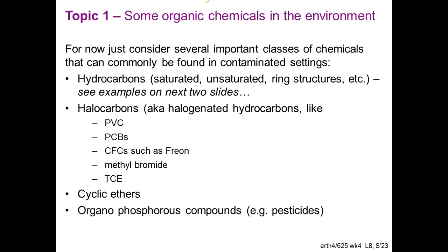We're going to consider some important classes of molecules. First, hydrocarbons - we can have saturated and unsaturated ones, ring structures, etc. Then halocarbons, which are halogenated hydrocarbons. The primary halogens in organic molecules tend to be chlorine and fluorine, with some bromine and occasional iodine. Examples include PVC (polyvinyl chloride), PCBs (polychlorinated biphenyls), CFCs (chlorofluorocarbons such as freon), methyl bromide, and TCE (trichloroethylene). We also have cyclic ethers and organophosphorus compounds.